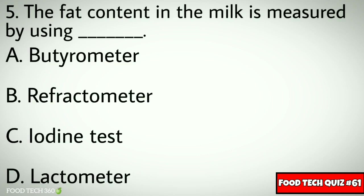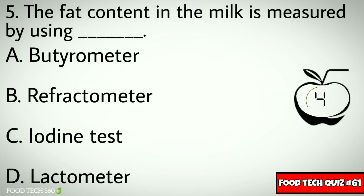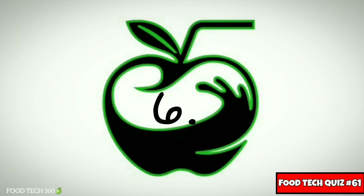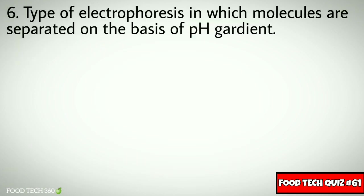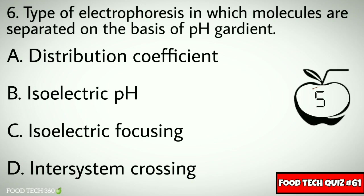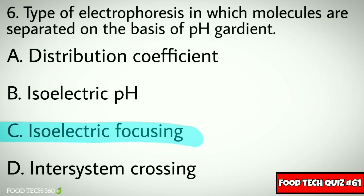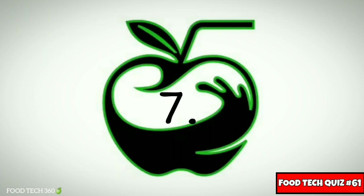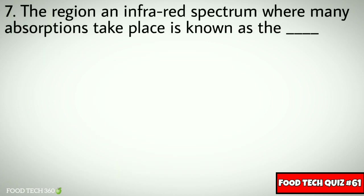Correct answer: a) butyrometer. Question number six: type of electrophoresis in which molecules are separated on the basis of pH gradient. Options: a) distribution coefficient, b) isoelectric pH, c) isoelectric focusing, d) intersystem crossing. Correct answer: c) isoelectric focusing. Question number seven: the region in the infrared spectrum where many absorptions take place is known as —